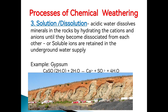The third process of chemical weathering is solution or dissolution. In this process, acidic water dissolves minerals in the rocks by hydrating the cations and anions until they become dissociated from each other, or soluble ions are retained in the underground water supply. For example, calcium sulfate is hydrated with water, causing the calcium and sulfate to become dissociated from each other, and some of the water becomes soluble ions that move downwards and can even be retained in the underground water supply.